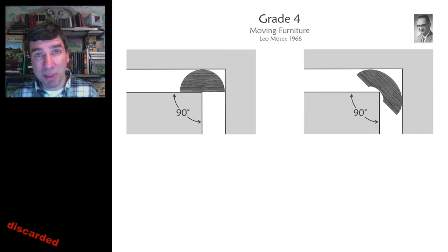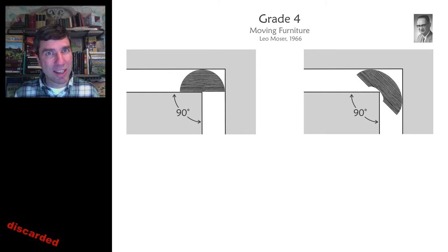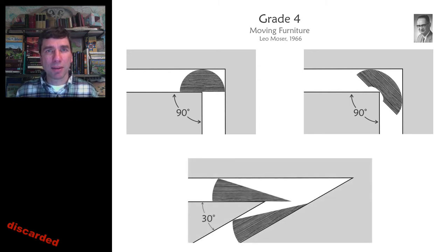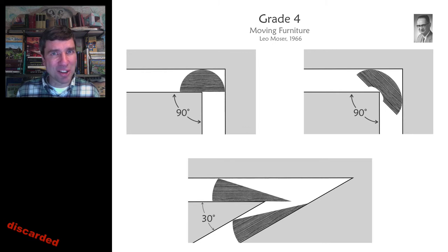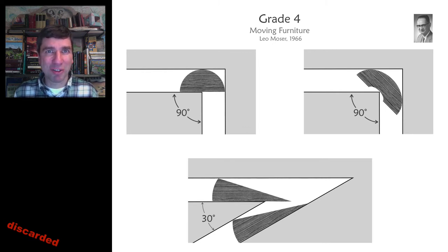The answer looks something like what's shown on the right, but it's not exactly that. You can also ask questions like what angles are really bad for you to try to get into your apartment building with a big desk.